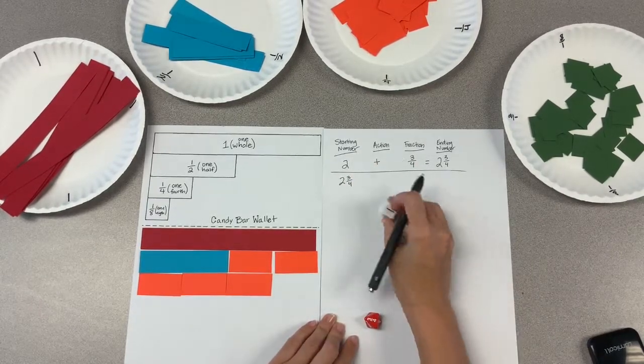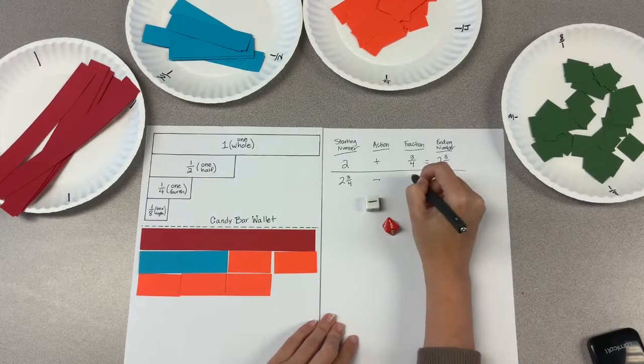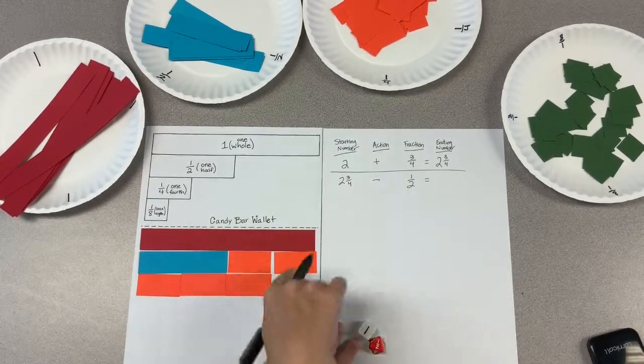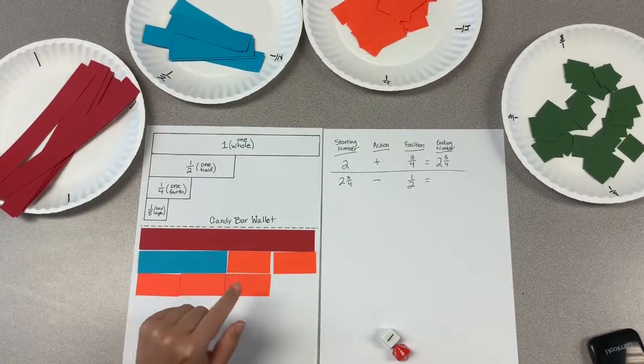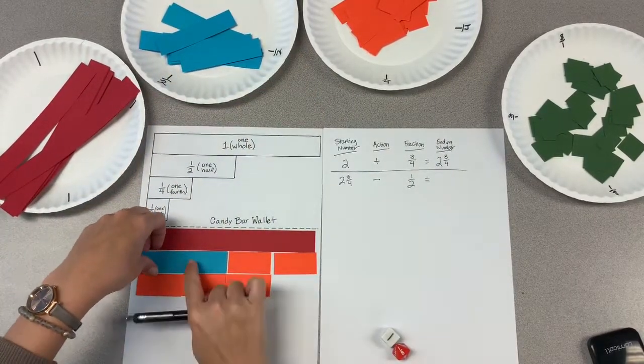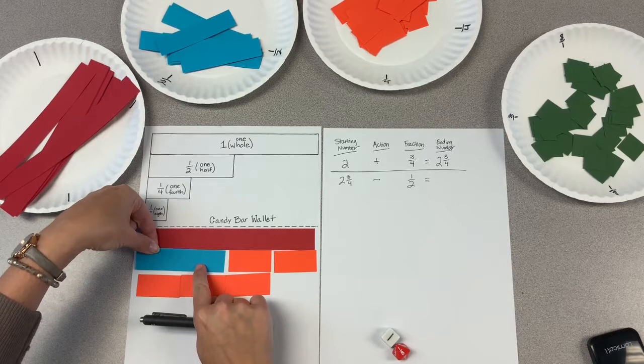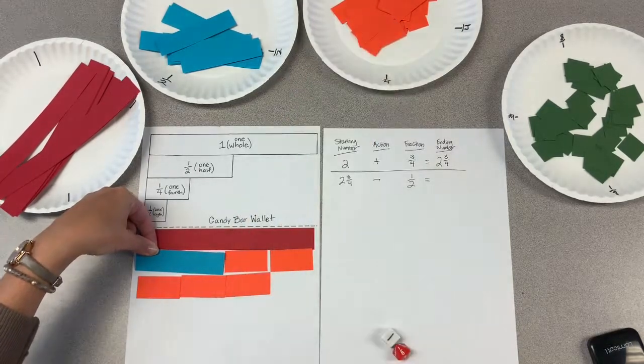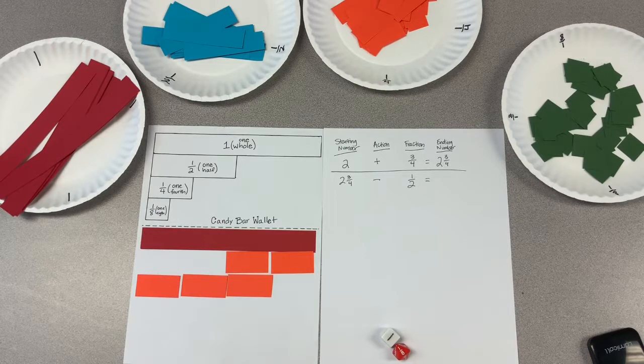Next roll. That becomes my new starting number, two and three fourths. I pick my action. Oh no, I have to subtract. One half. I know that this is a half so I'm going to have students take this piece and deliver it back to the bank. If a student didn't have a blue half piece, we would talk about equivalence. That two orange pieces, two fourths is equivalent to a half and they would turn those back into the bank.